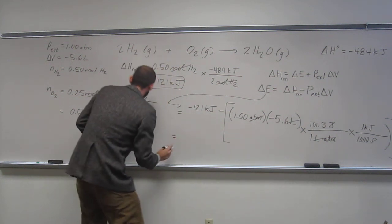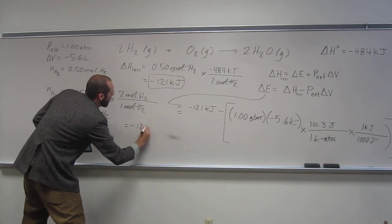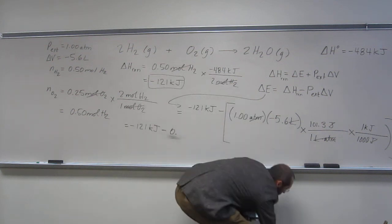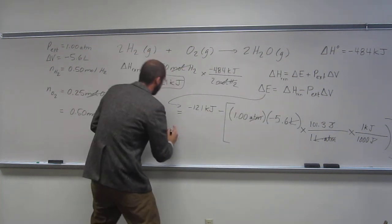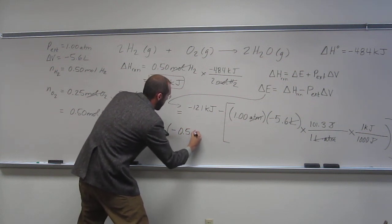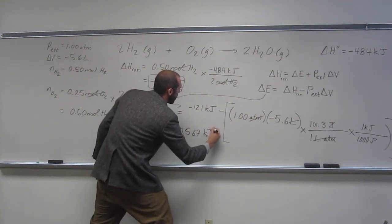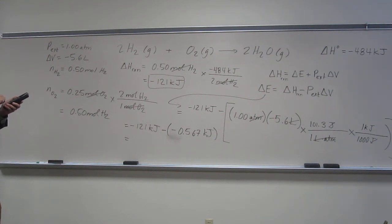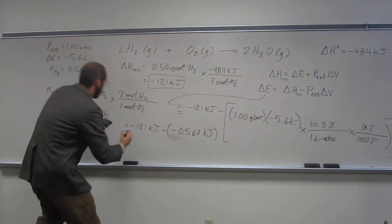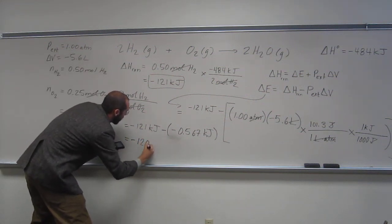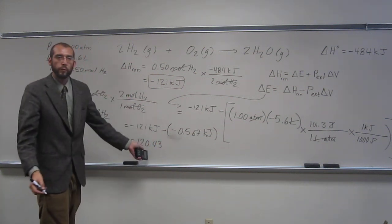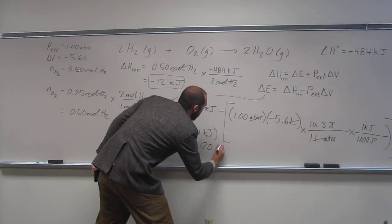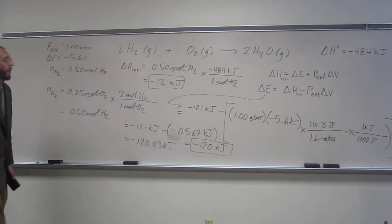So let's write it out. Let's do it over here. So we'll have a little bit more room. So negative 121 kilojoules. And then what are we doing? Subtracting the negative. Negative 0.567 kilojoules. Like that, so we'll be adding to it. So I got this number, negative 120.43, right? But when we do our sig figs, it's going to be negative 120 kilojoules. So in this case, that's delta E. Notice, the amount of energy between delta H and delta E is very, the amount of difference is very tiny.